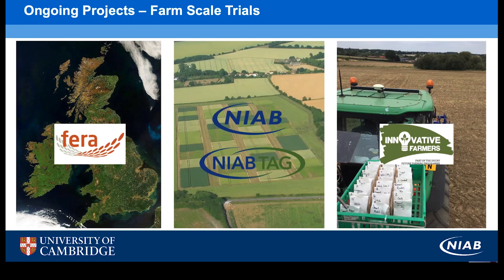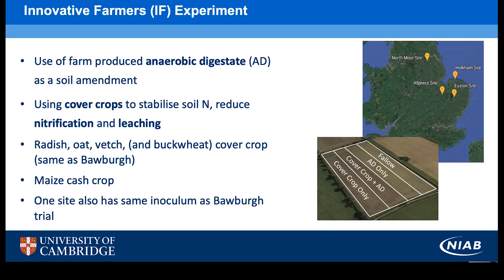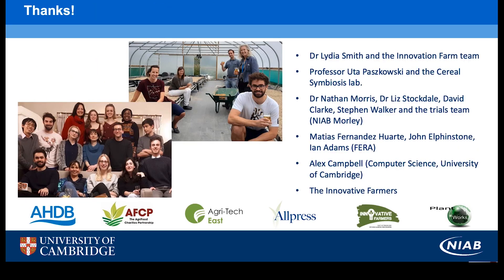I hope to confirm some of my findings on the farm scale, working with the Innovative Farmers Field Lab. Here are four of the seven sites. The farmers were interested in using farm-produced anaerobic digestate as a soil amendment, using cover crops to stabilise the nitrogen and reduce nitrification and leaching. The cover crop mix used here is radish, oat, vetch and buckwheat — killed off during winter frosts — the same mix as in one of the replicated trials. The cash crop in this case is maize. For more results, please check my page on the AHDB website, where I've recently given a 30-minute talk going through results in more detail.